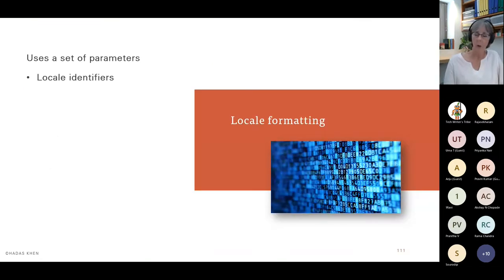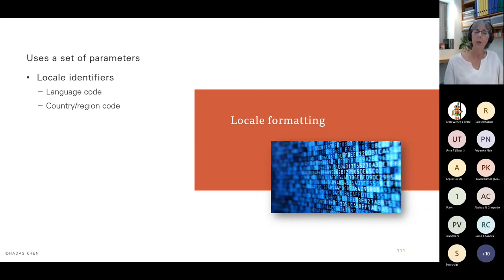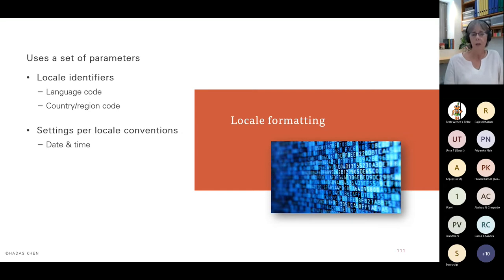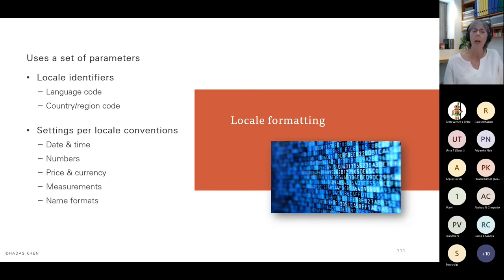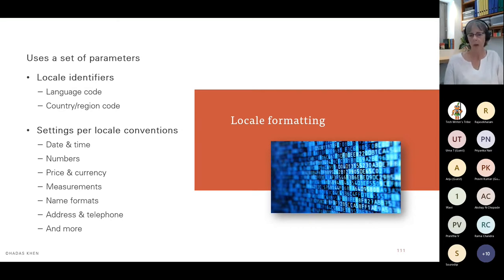A side note: internationalization is software that can be adapted to various languages and regions without engineering changes. Localization uses the software most specifically for locale-specific components. This brings us to locale formatting. I write in US English, but I need to be aware of locale formatting. It uses identifiers such as language codes or country-region codes obtained through the IP to set these conventions per country. As a UX writer or designer, we need to tag the developers in the design to make sure they remember something needs locale formatting.